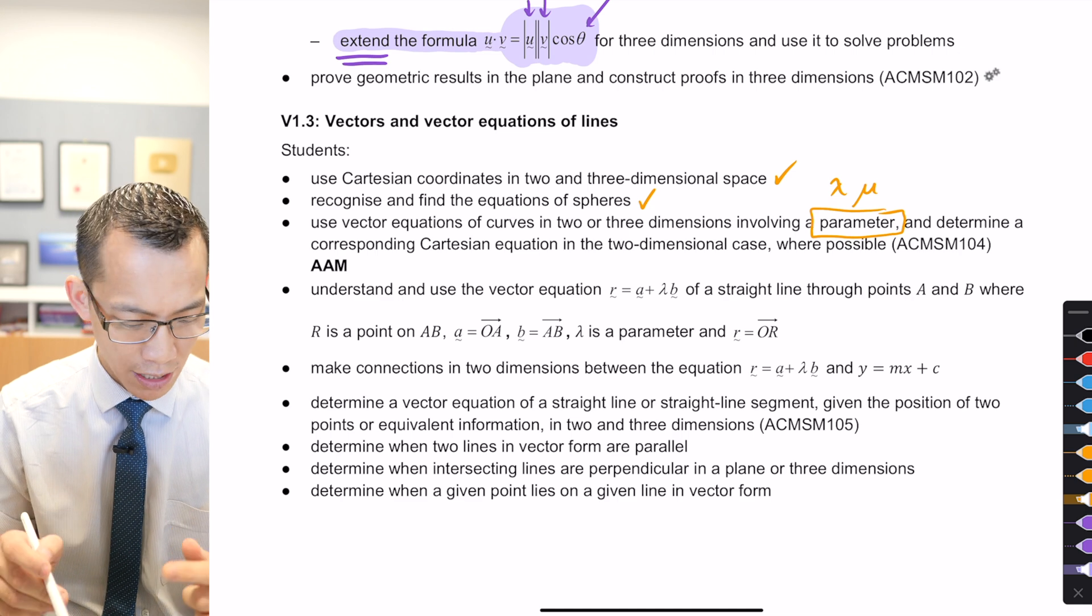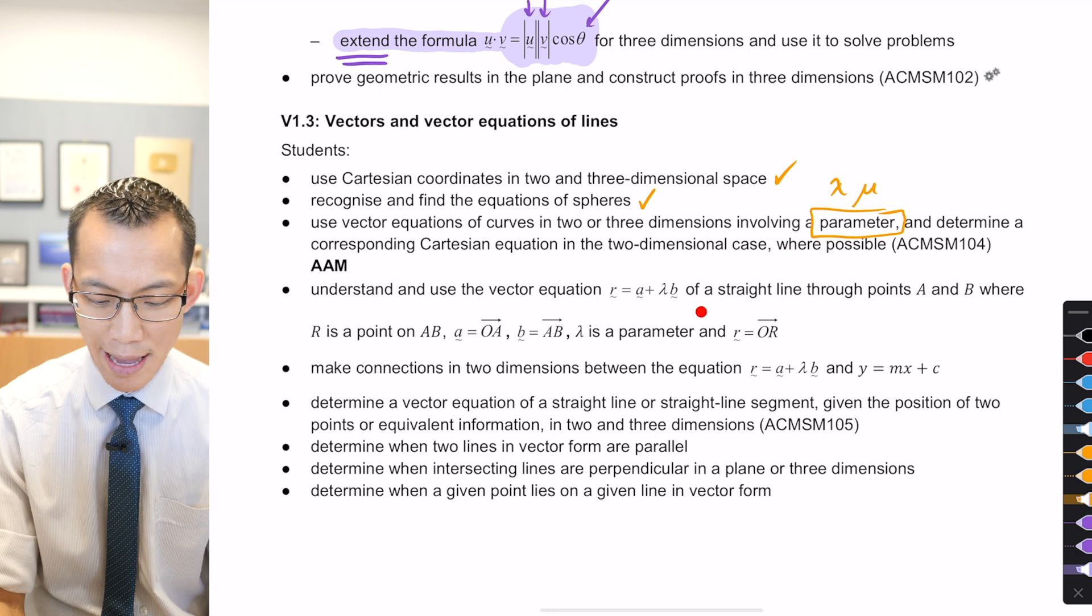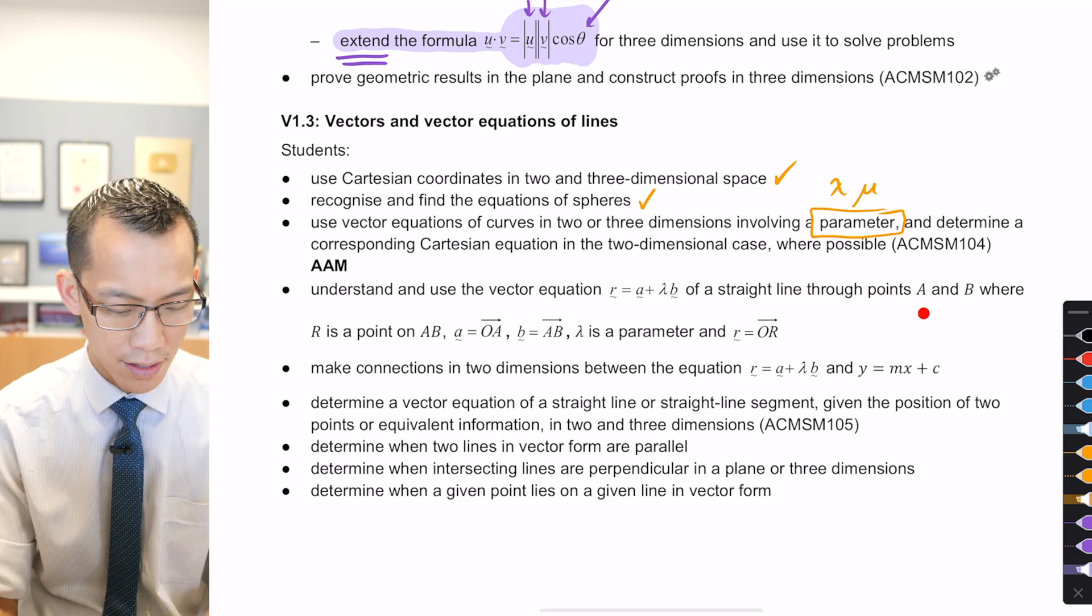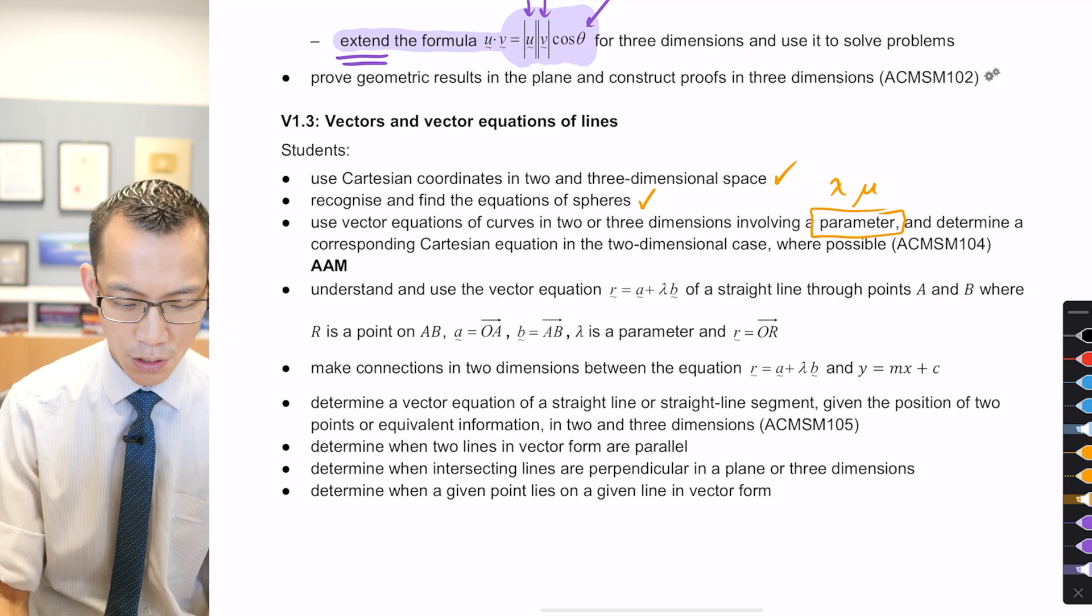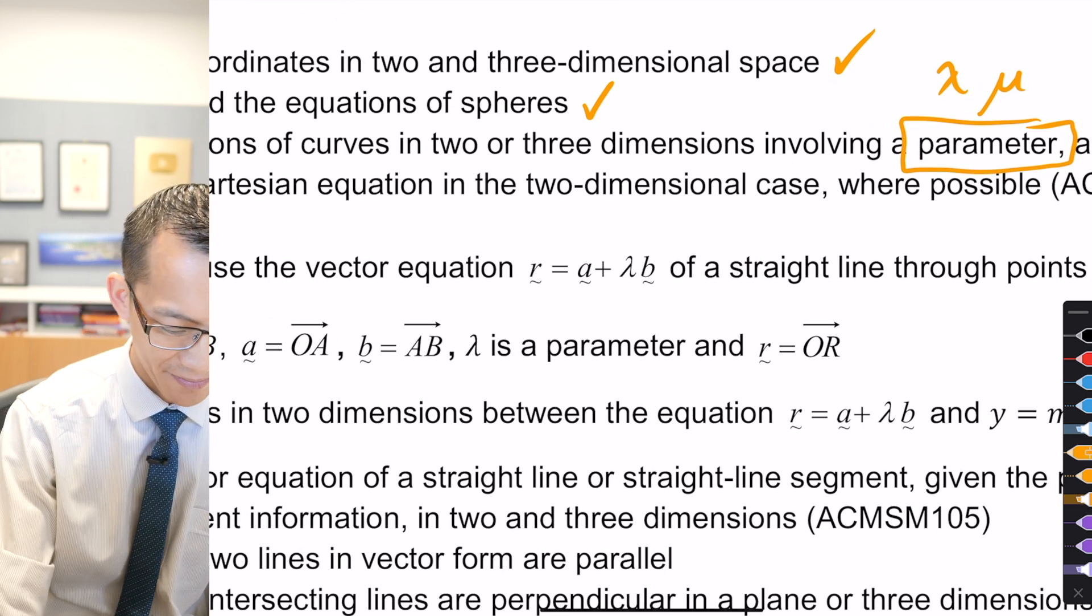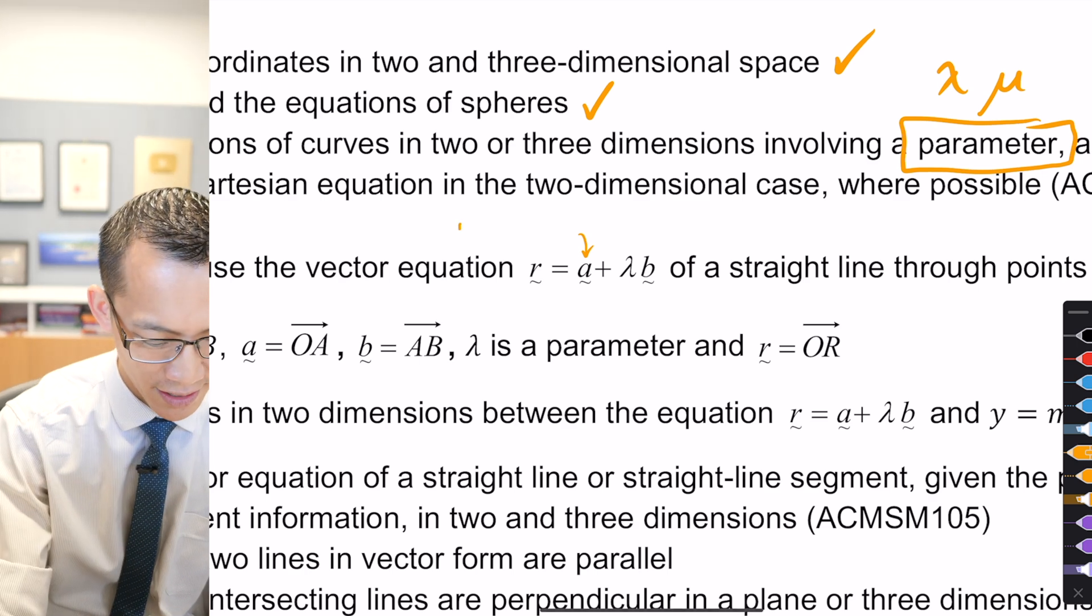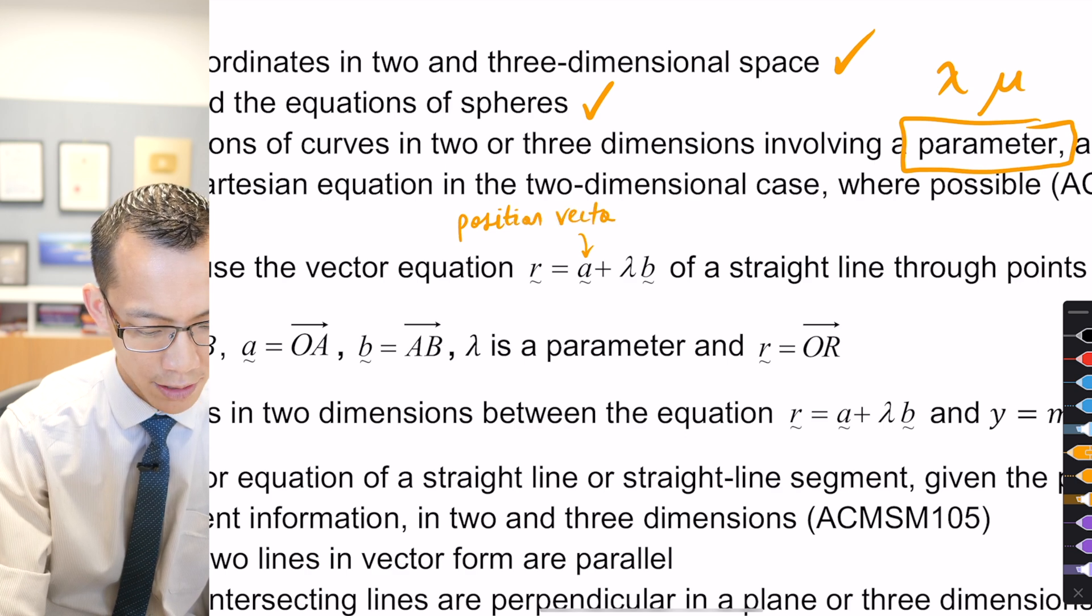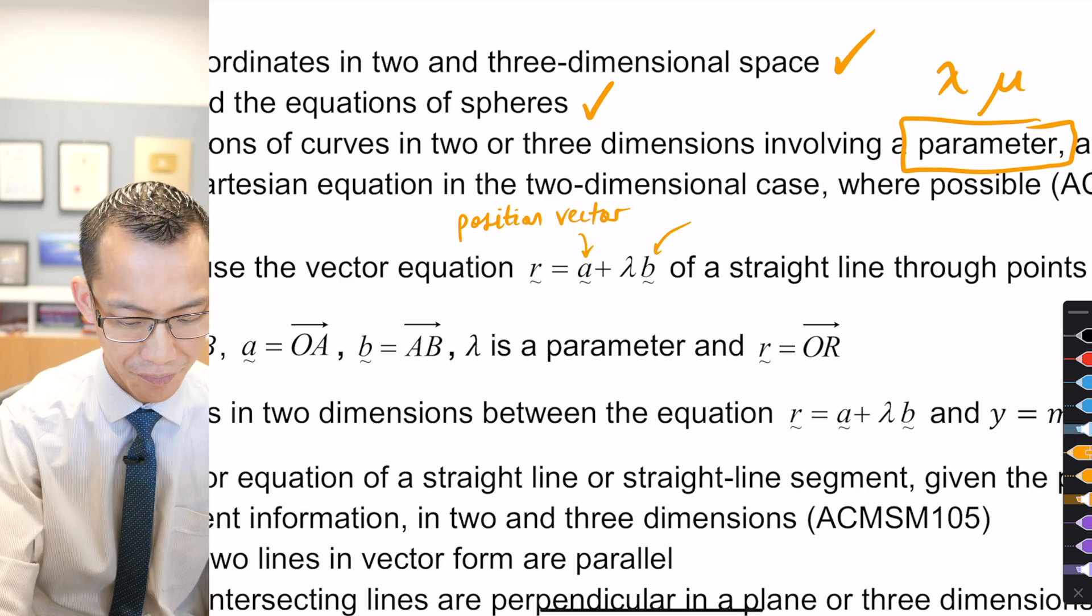Understand and use the vector equation r equals a plus lambda b of a straight line through points a and b. So we've actually done this a few times. If I give you any two arbitrary points a and b, we know that a is called the, what is it again? Starts with a p? Which vector is it? Yeah, it's the position vector. We know what that part is and then the b vector in this case, what do we call that? Not the position vector, it's the direction.